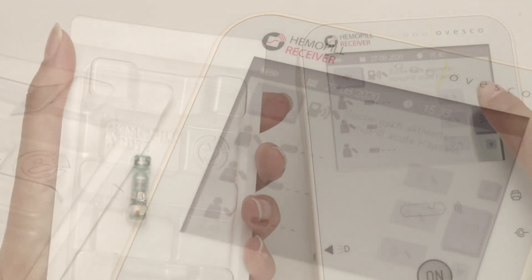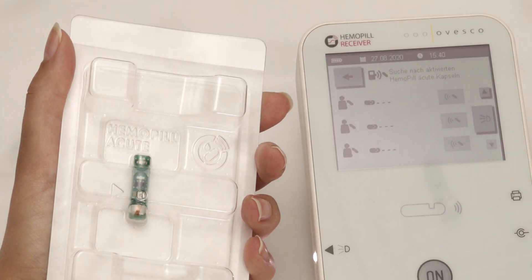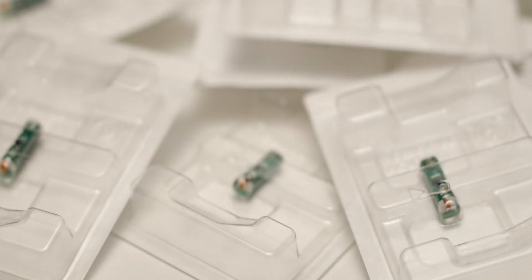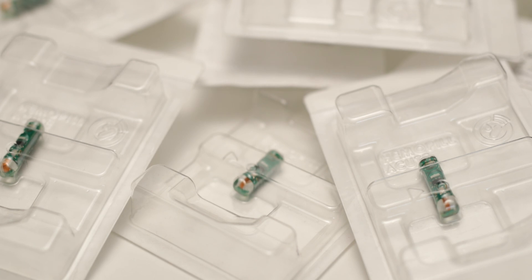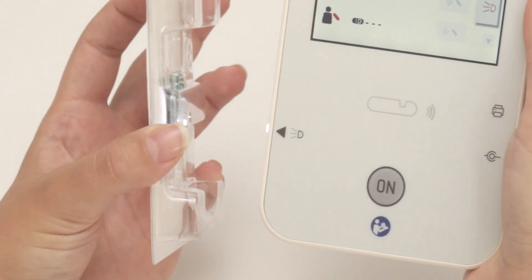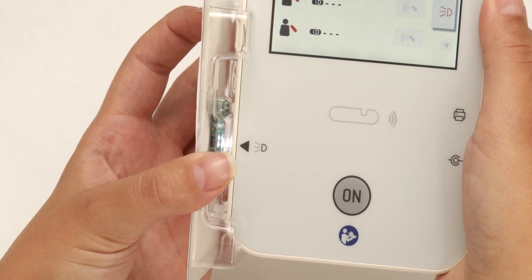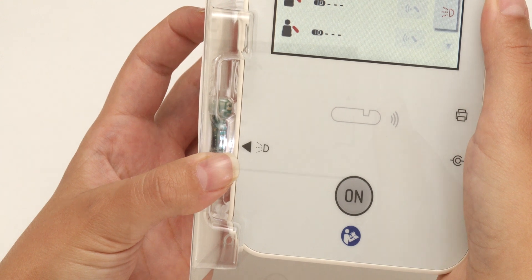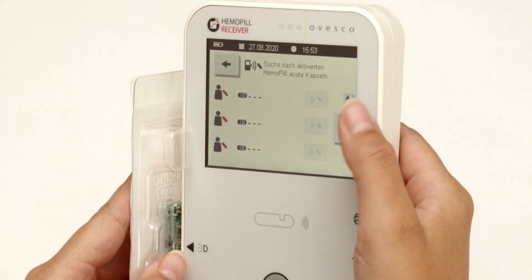The LED button activates the integrated light source, which activates the sterile-packed Hemopill. The triangles must be brought together. The display shows the specific ID of the activated capsule.